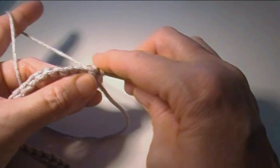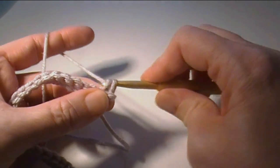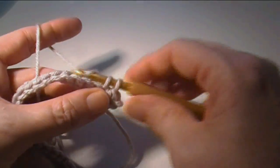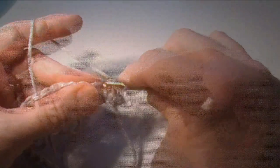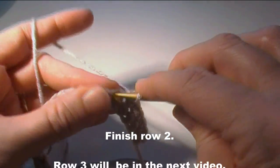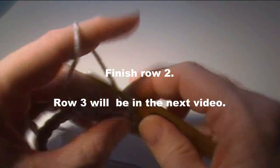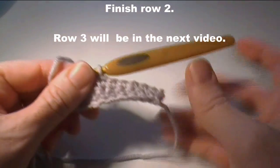So no matter what the stitch is, whether it's single crochet, front post double, or front post treble, you single crochet in each of those stitches. I'm going to end this video here and we will do row three in a different video. So I will see you there.